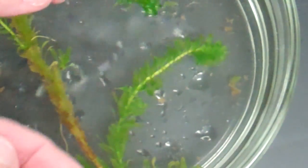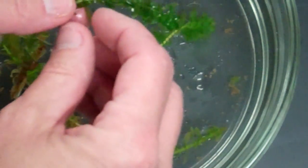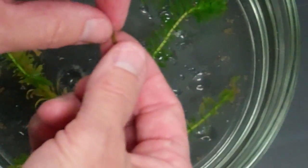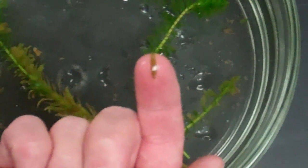So you're going to take your piece of your plant and pluck off one leaf. One little tiny leaf, that's all you need.